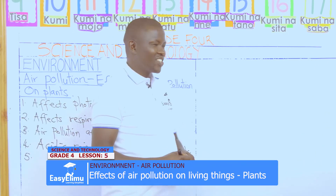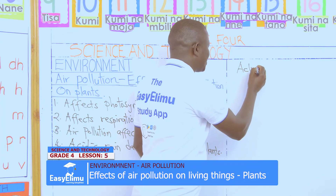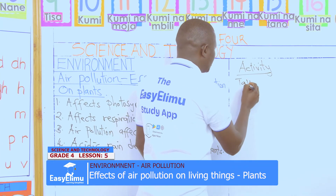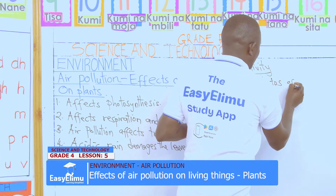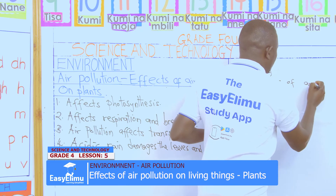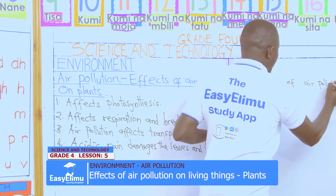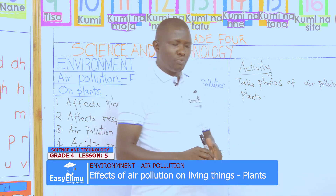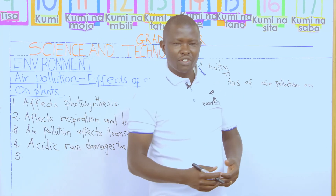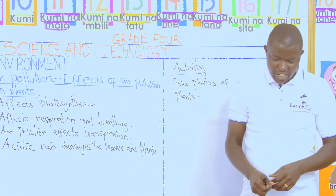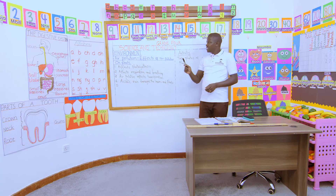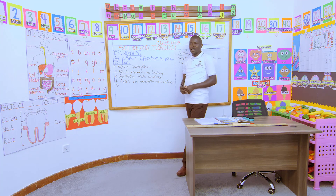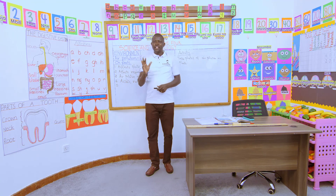Any questions, class? For our activity, kindly take photos of air pollution on plants. Print them and bring them tomorrow or the next lesson for us to mount them in our portfolio for future reference. Remember, we have said that air pollution affects plants in the ways we have already discussed. That marks the end of our lesson for today. Have a wonderful time. Till we meet again.